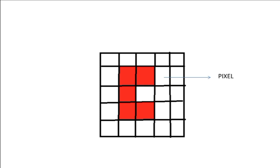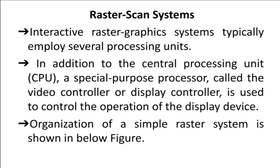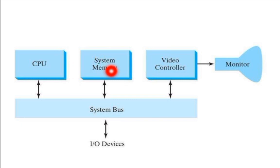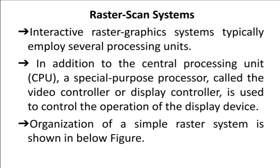Now I'm going to discuss in detail how a raster scan system constructs any image. A raster scan system produces the picture in the form of pixels. To produce a graphical image using a computer, the main unit of the computer includes the CPU, system memory, I/O devices, and a monitor. But in a raster scan system, along with the CPU, I'm going to use a special purpose processor called a video controller or display controller.